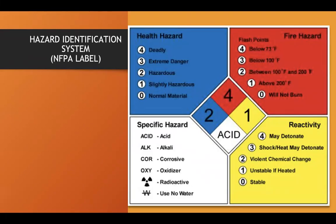For example, a chemical labeled with red number four is able to ignite at 73 degrees Fahrenheit — the flash point is the lowest temperature at which a chemical ignites. Yellow number one means unstable if heated. White labeled as acid means the specific hazard is an acid. So you know the chemical is hazardous, can ignite at 73°F, is unstable if heated, and is an acid.